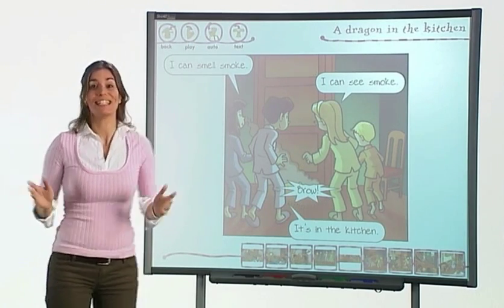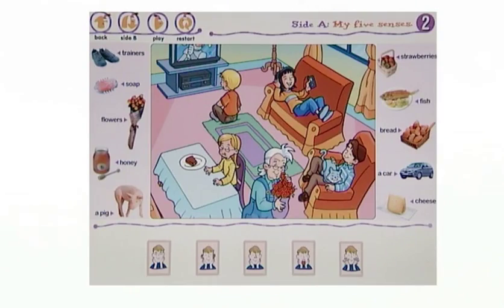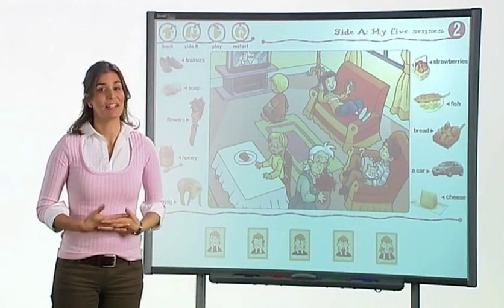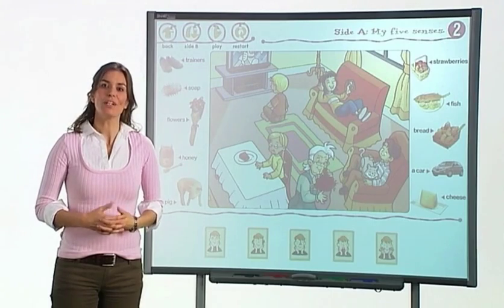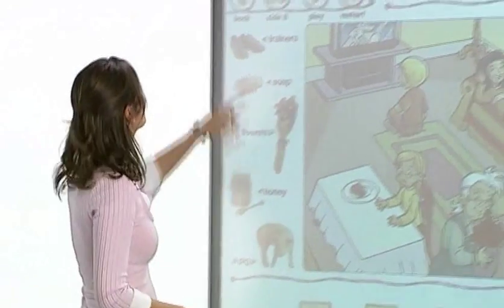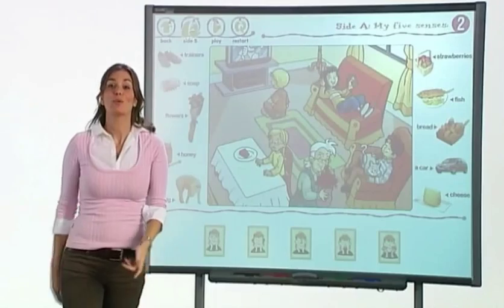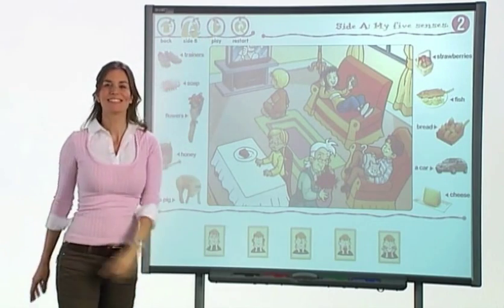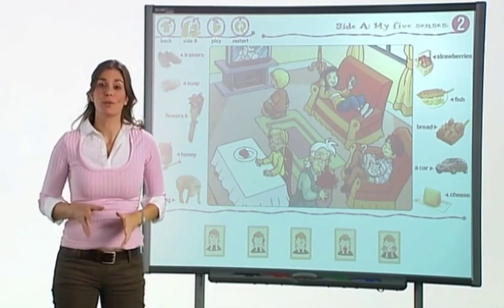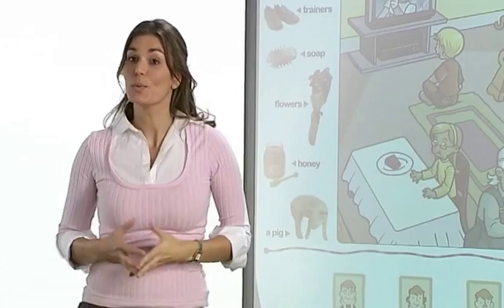And finally, let's look at the e-posters. Each unit of Sparks has a double-sided poster with a selection of cut-outs and listening activities to work with. In the main menu, the teacher can see which side of the poster, A or B, is displayed and whether or not a listening activity is available. The cut-outs always appear at the bottom of the screen, as these are the pieces which the children will need to work with.